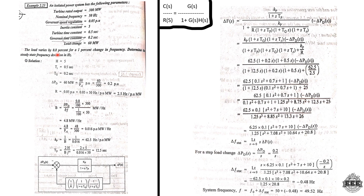The B value is delta Pd divided by delta f. For a 1% change in frequency, load changes 0.8%. So B = (0.8/100 × 300) divided by (1/100 × 50), giving 4.8 MW per hertz. In per unit, dividing by 300 gives B = 0.016 per unit MW per hertz.